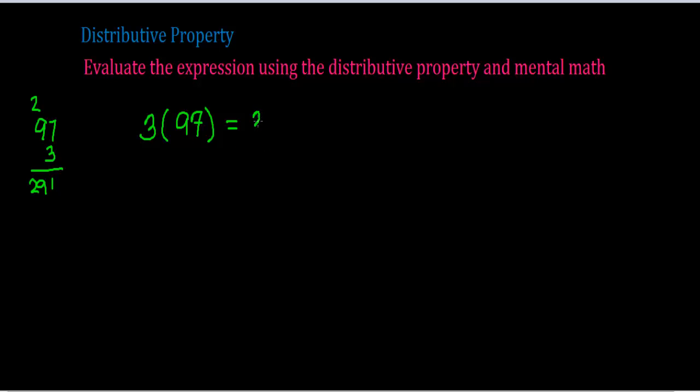This is how it helps us. I take 3 times, and then inside this parentheses, instead of 97, I'm going to break up 97 into a sum of 90 plus 7. How does this help?